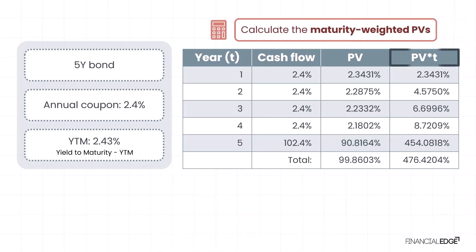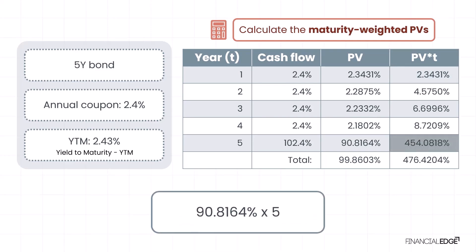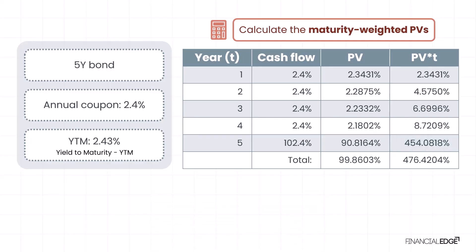Now let's move on to the maturity-weighted PVs — the PV times T column in the table. This is where we take the PV of each cash flow and multiply it by the number of years until the payment is received. For instance, the PV of the first year cash flow is multiplied by one, while the PV of the year five cash flow is multiplied by five. These values give us the time-weighted contribution of each cash flow. Once we've calculated these, the next step is to sum all the maturity-weighted PVs. This gives us a total of 476.4204 percent.